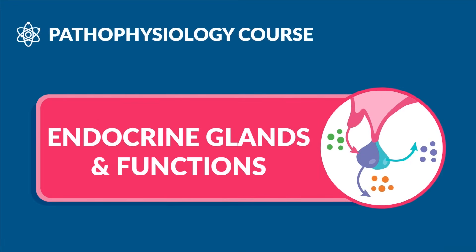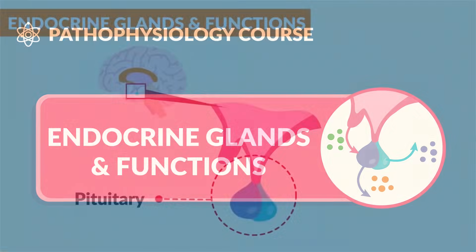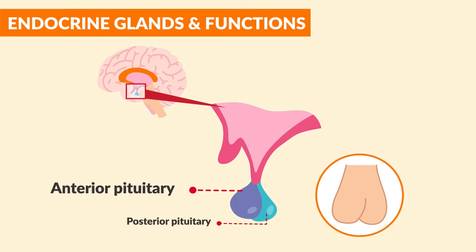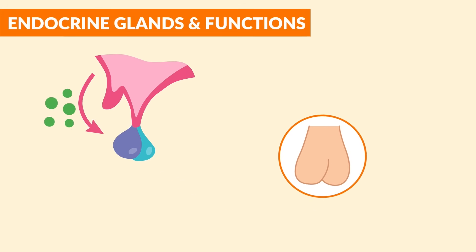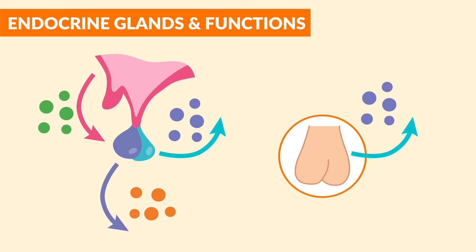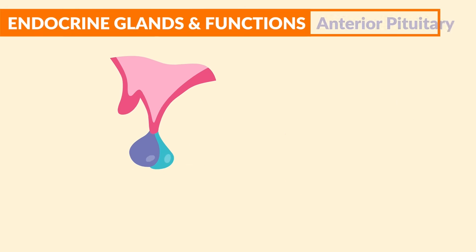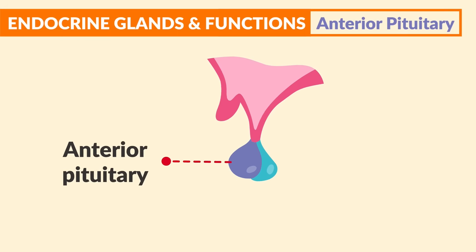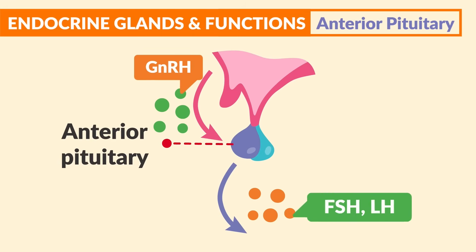Now for endocrine glands and functions, starting with the pituitary, which I call the testes of the brain, since they look like a set of testicles with two lobes — the anterior and posterior pituitary — and very similarly, they too release hormones that help the body do many functions. Starting with the anterior pituitary, this is the largest part of the pituitary gland and is responsible for synthesis and release of most pituitary hormones.